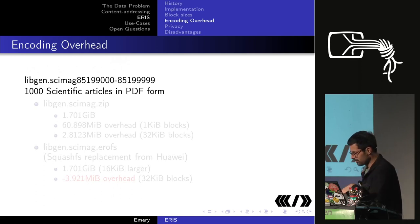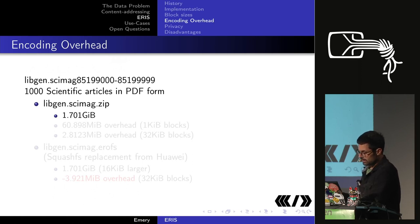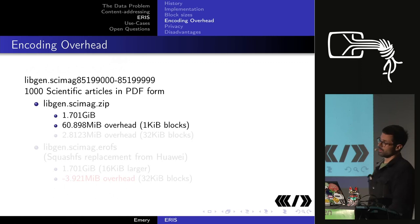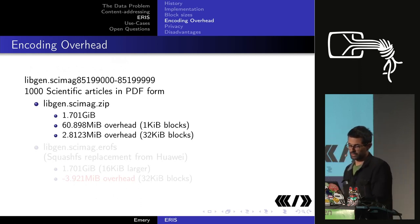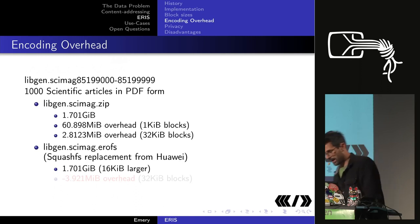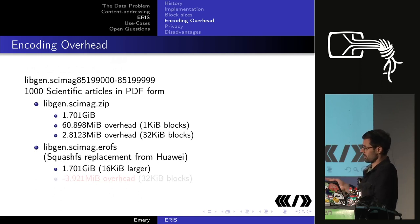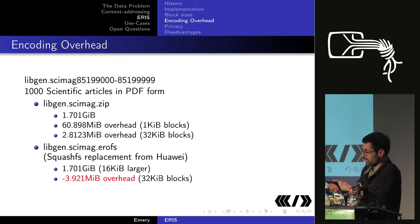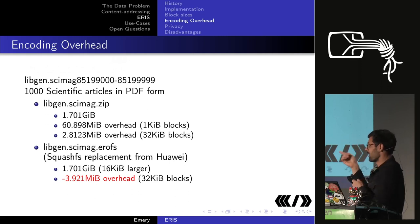To measure overhead, I took a Libgen zip file with 1,000 PDFs, totalling 1.7 gigabytes. Encoding into 1K blocks produced 61 megabytes of Eris-only metadata; with 32K blocks it's only 3 megabytes. I then unzipped and repacked it into an AeroFS image. The AeroFS image was 16K larger than the zip, but the encoded Eris form was smaller by 4 megabytes — implying about 6 megabytes of deduplication inside the blocks that zip didn't find.